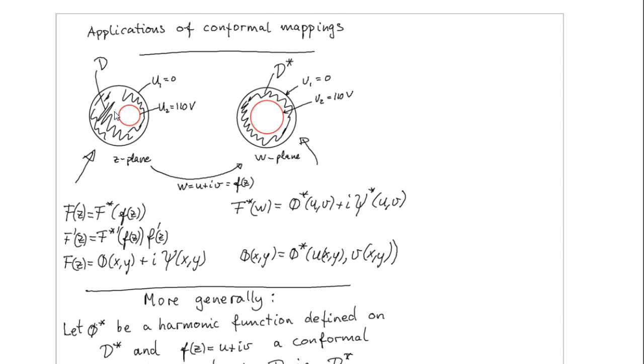But imagine if we could find some conformal mapping which mapped this region D, where we want to find the solution, onto some symmetric domain D star.